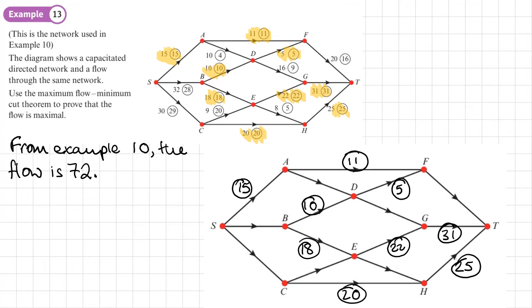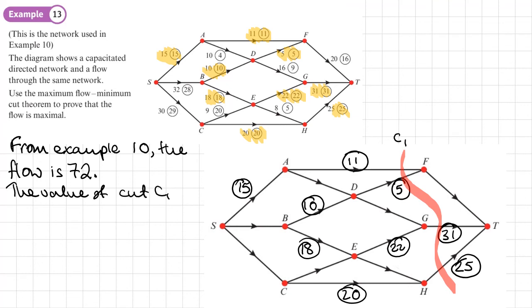Trying a cut through these arcs — all saturated — we call this cut C1. The value of cut C1 = 11 + 5 + 31 + 25. Checking that all those arcs flow into the cut — they do — gives a value of 72.